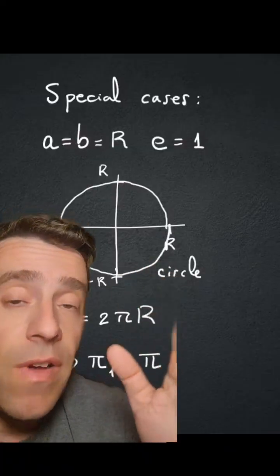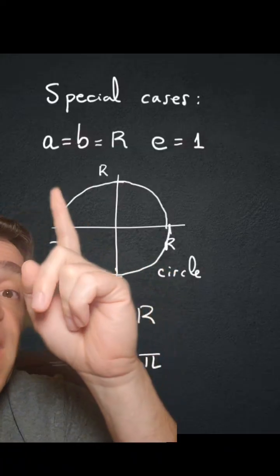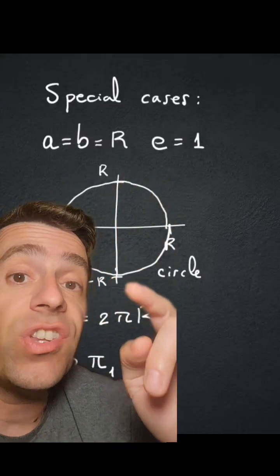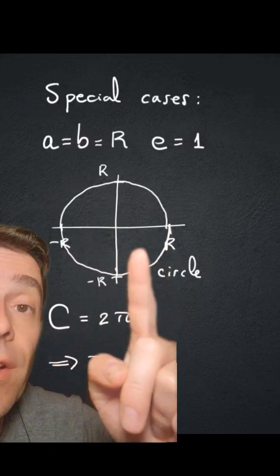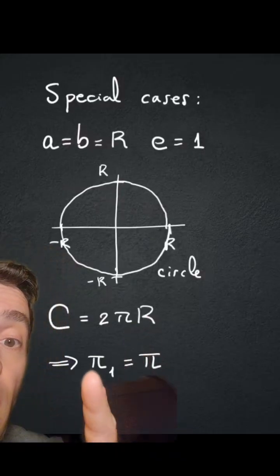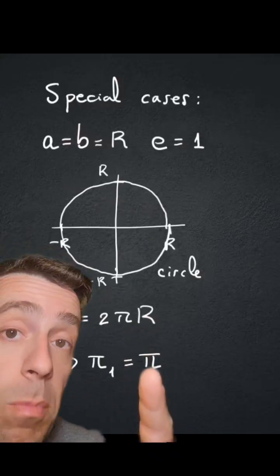Let's first look at some special values of pi sub e. As I said, when a equals b equals r, in that case the eccentricity is 1, we have a circle of radius r, and then the circumference is 2πr. So pi sub 1 equals π.